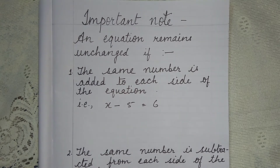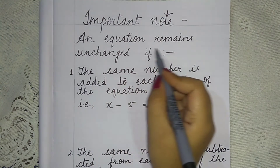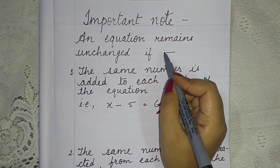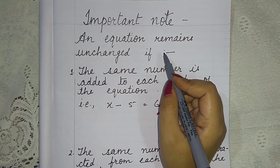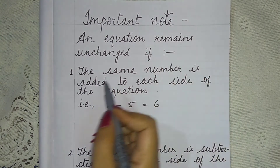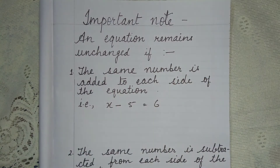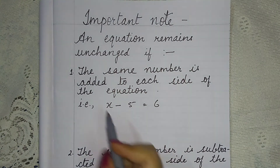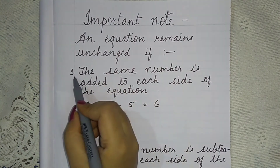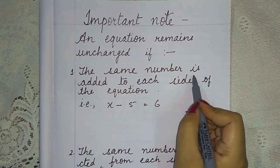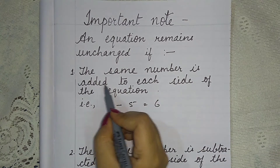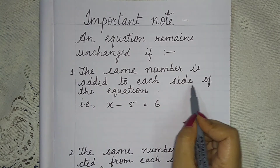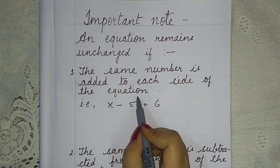These are some points that you have to remember. An equation remains unchanged — it doesn't change, but your equation will be solved. First: the same number is added to each side of the equation.